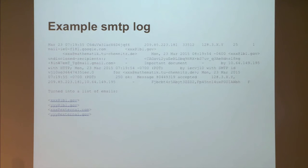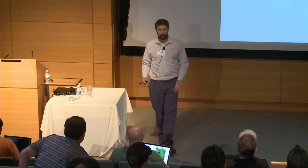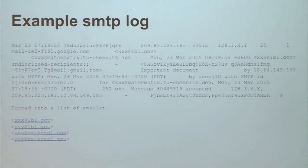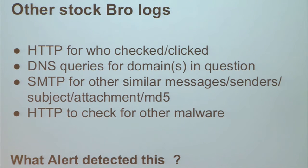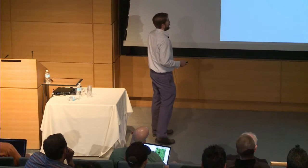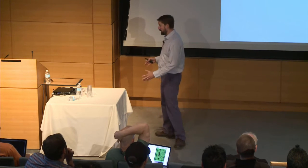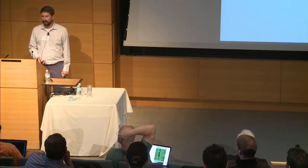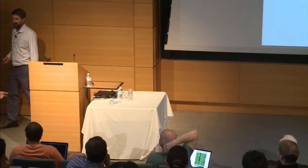To investigate, we turned to Bro's SMTP log to start mining information. As soon as we found out about the incident, we were in SMTP logs looking for the subject 'Important Document,' looking for infected accounts at the lab, harvesting all the people who got the message. We also used the HTTP log to see who went to the phishing site, checked DNS to see who looked it up, and looked for other similar messages, senders, attachments, and MD5s.